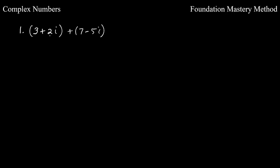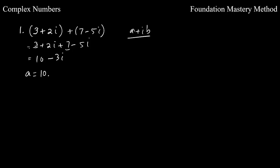Let's add two complex numbers. We have (3 + 2i) plus (7 minus 5i). Open the parentheses and collect like terms: 3 plus 7 is 10, and 2i minus 5i is negative 3i. So the result is 10 minus 3i. Comparing with a + ib form, a is 10 and b is negative 3.